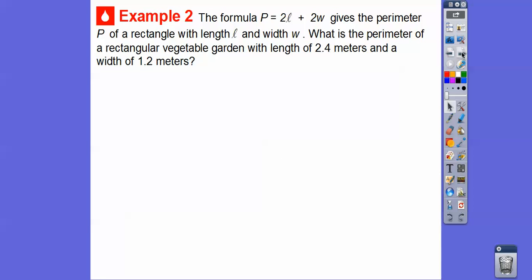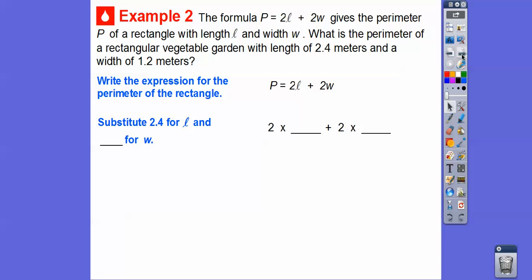All right, so here we go. So the formula P equals 2L plus 2W gives the perimeter of a rectangle with the length L and the width W. So what is the perimeter of a rectangular vegetable garden that has length of 2.4 meters and width of 1.2 meters? So we'll write the expression for the perimeter of the rectangle, 2L plus 2W right there. So then we just substitute in 2.4 for L. And then we're going to substitute in 1.2 for the width right there for W.